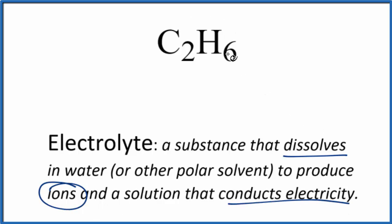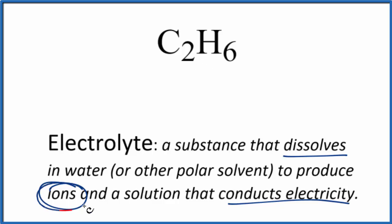For ethane here, C2H6, we have carbon and hydrogen. So we have a non-metal bonded to a non-metal. This is considered a covalent or molecular compound. Because of that, when you put it in water, it won't break apart and produce ions. So you won't get any ions with this.